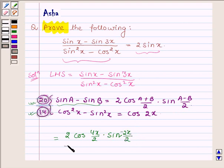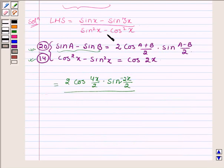And in the denominator we have sin square x minus cos square x which on applying the second identity can be written as minus cos 2x.